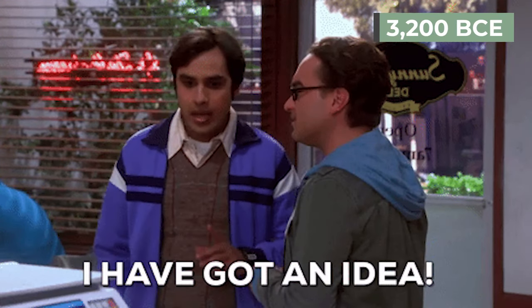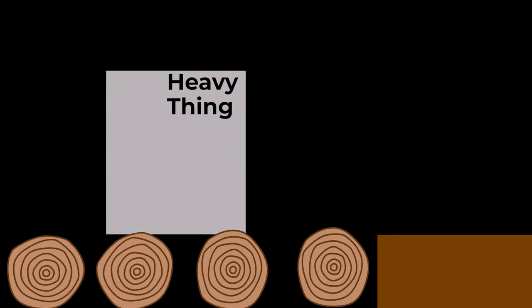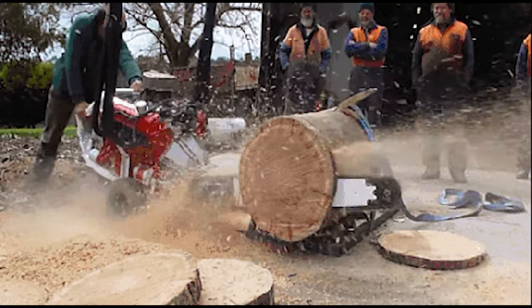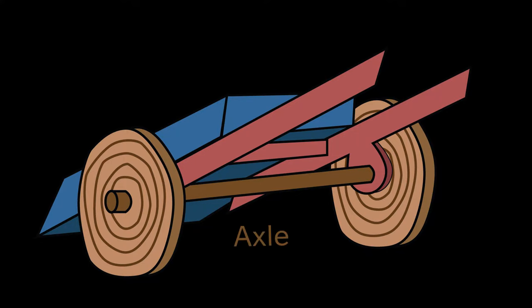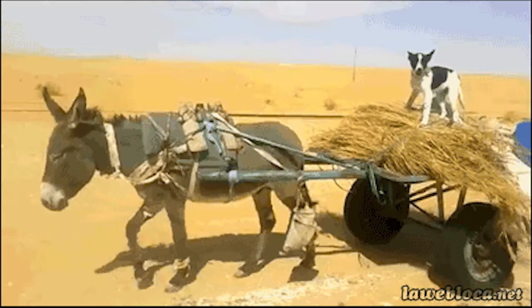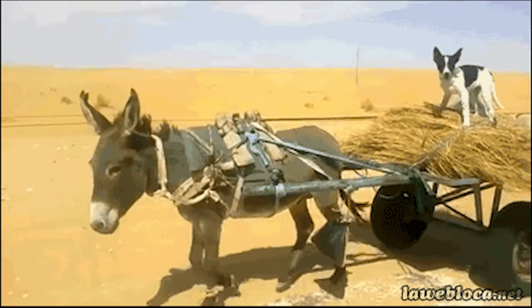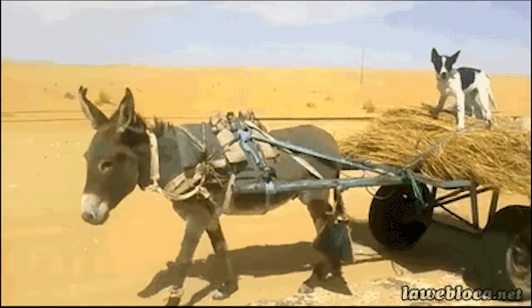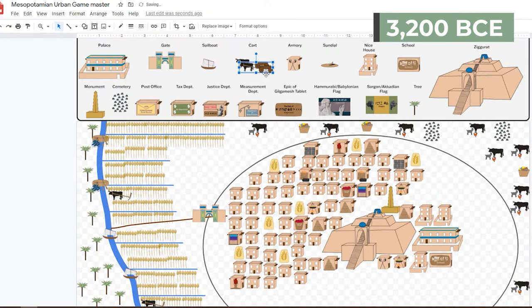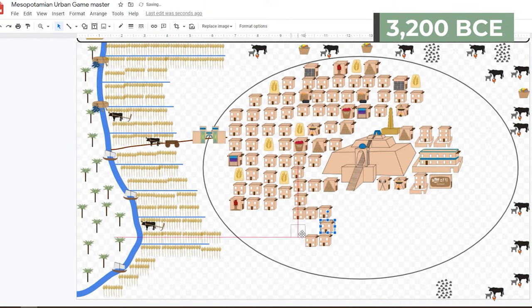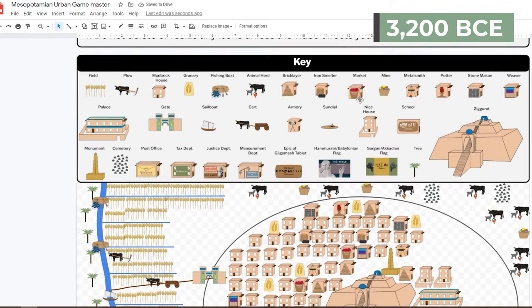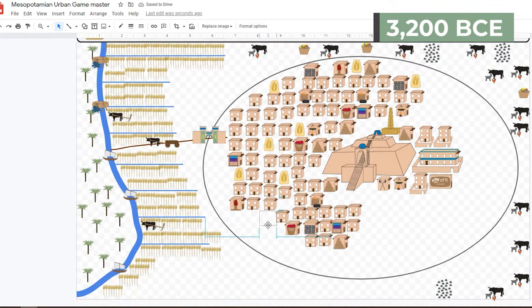It's 3,200 BCE and someone in your city-state discovered they could move heavy things easier if they rolled it over a log. After multiple innovations, they realized they might not need the whole log, just the ends. They created an axle to connect the wheels to each other and to the cargo area. The cargo area was connected to the axle with hollow tubes so that the axle and wheels could spin. Sumerians can now use animals to pull these carts and wagons to move heavy loads much faster and much easier. Add one cart on your path, ten homes, one iron smelter, one stonecutter, one city market, one weaver, one bricklayer, one potter, ten fields, one animal herd, and one granary.